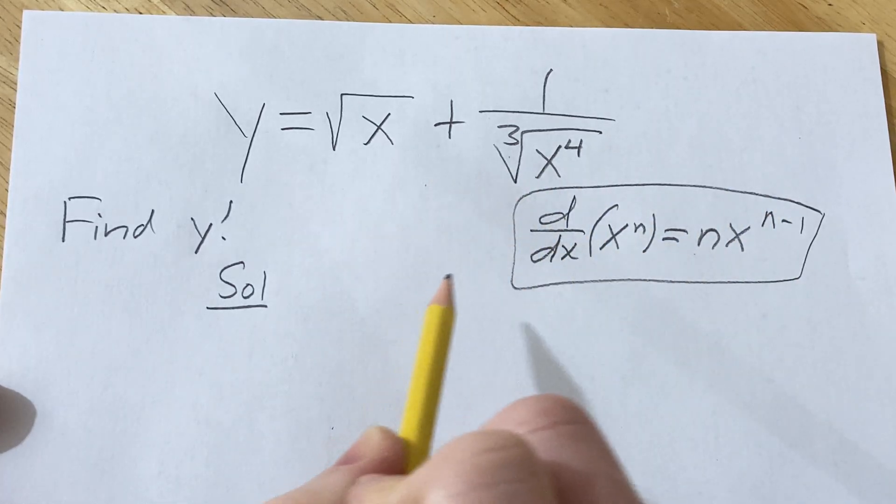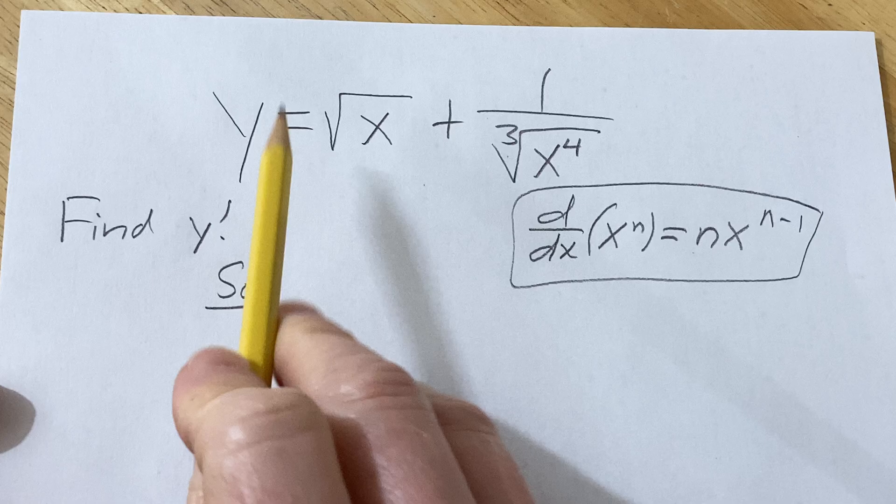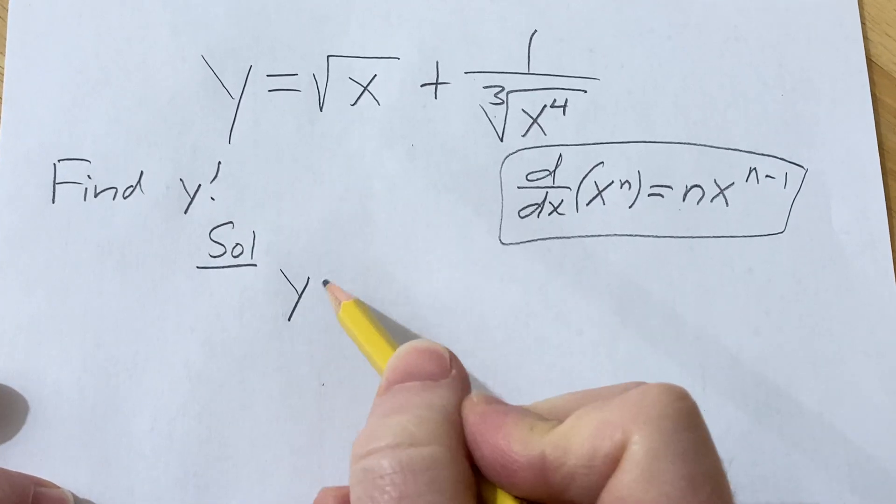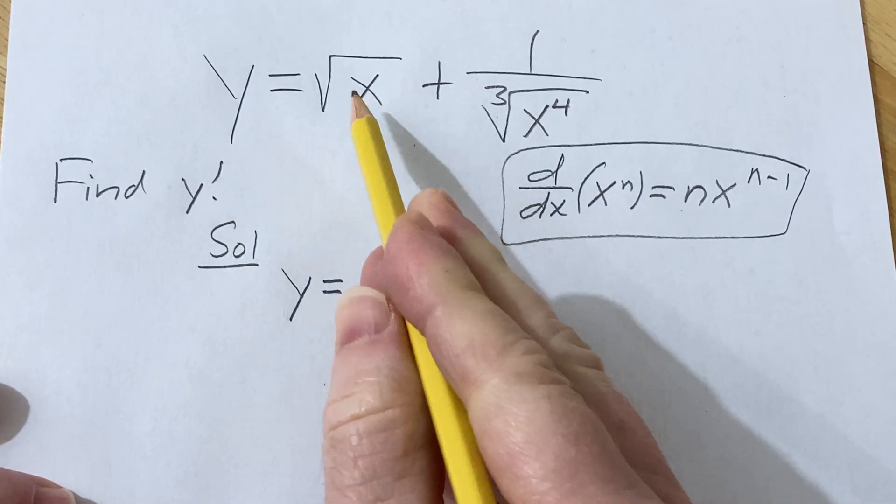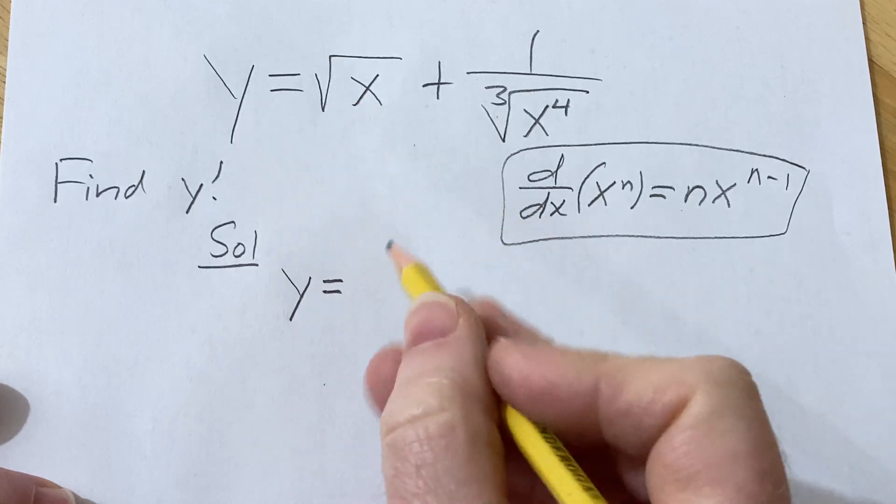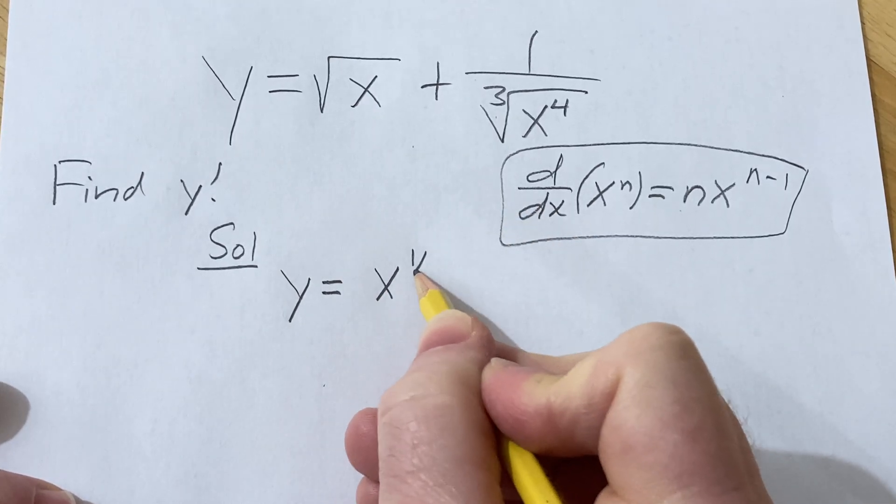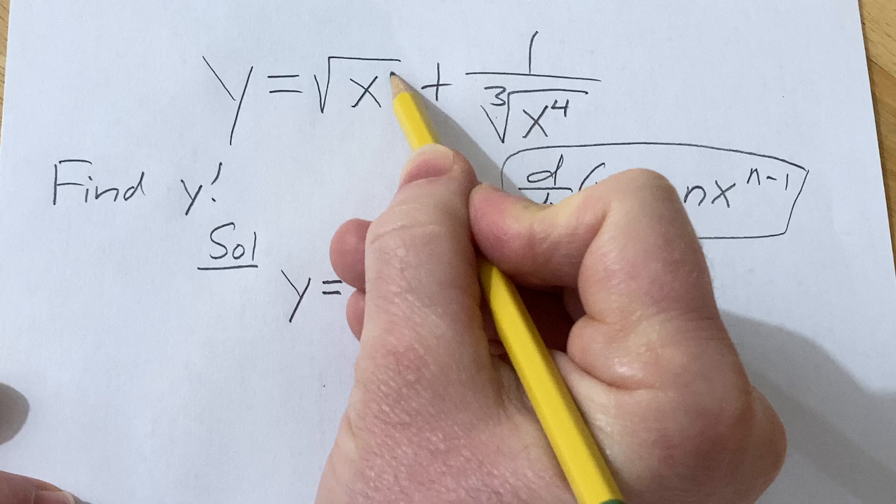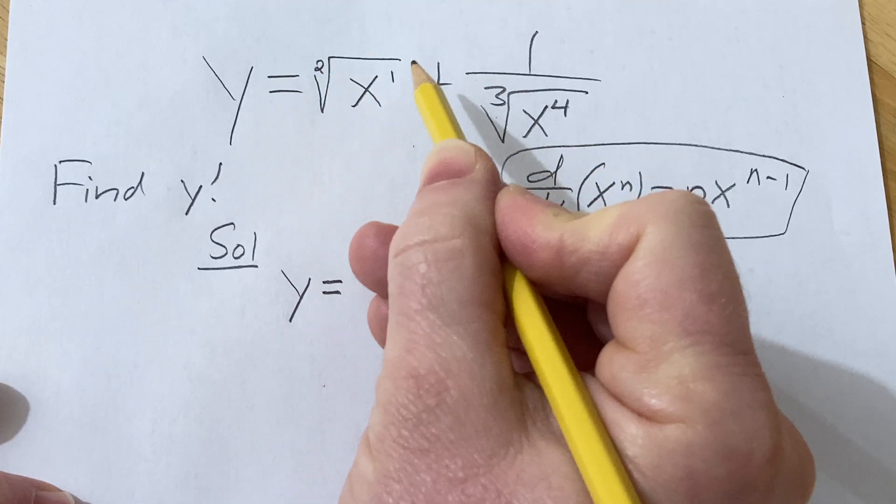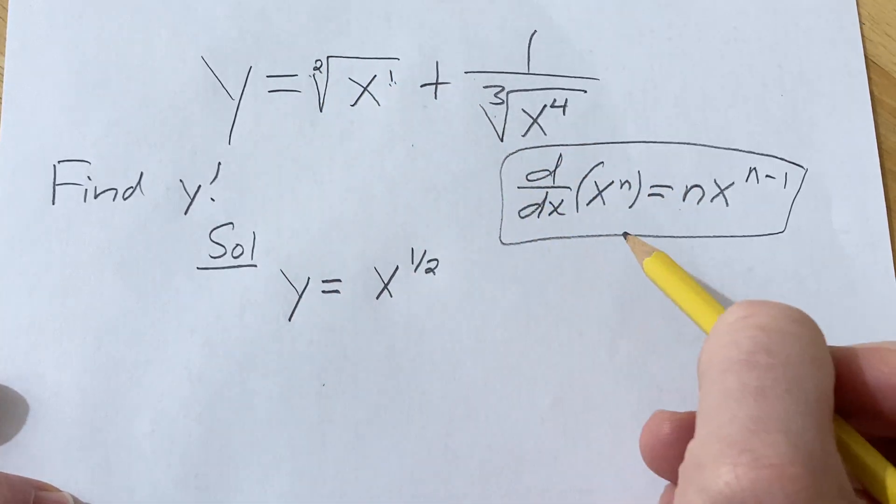So we need to do some work before we use this rule. So let's go ahead and start rewriting our function. So y equals, so the square root of x is the same thing as x to the one half. This is x to the one over two. And there's really a one here and there's really a two here. So it's one over two, really important.